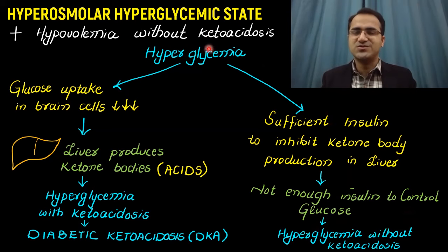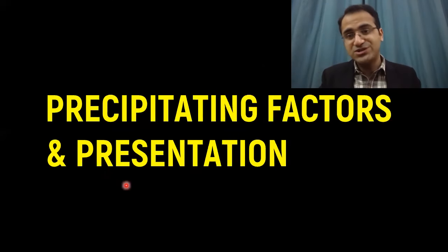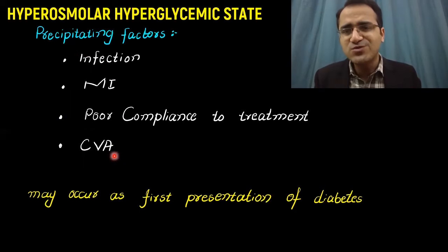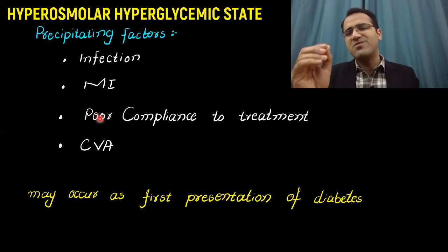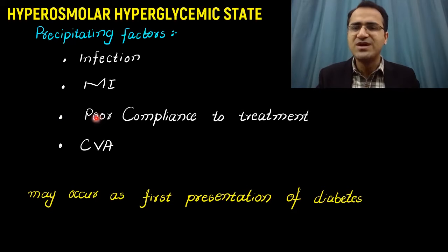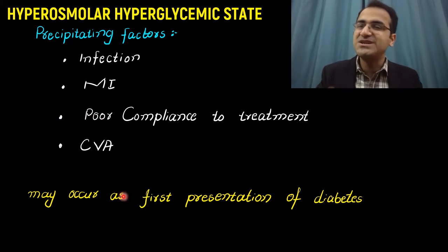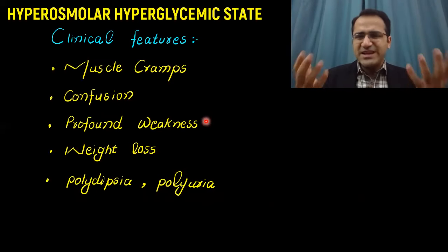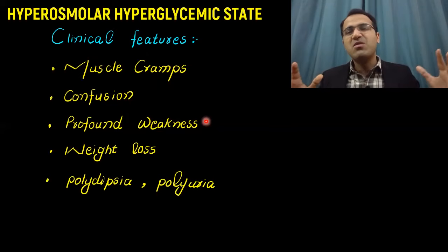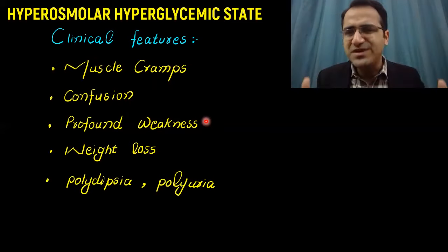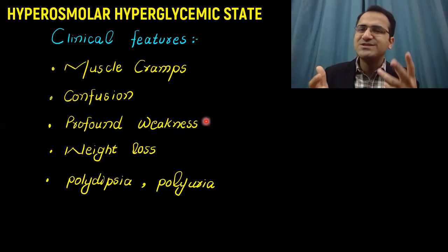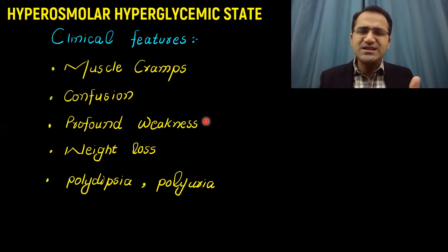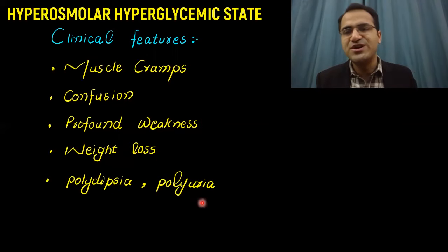Precipitating factors include infection, MI, poor compliance to treatment, and cerebrovascular accidents. Infections and poor compliance to treatment are the two most common causes of HHS. HHS might also be the first presentation of diabetes and the point where patients get diagnosed. Presentation of HHS is very vague — a diabetic patient may come to the ER complaining of muscle cramps, confusion, fatigue, and profound weakness. When you check blood glucose levels, they may have shot up to 700. Other classical features include weight loss, polydipsia, and polyuria.